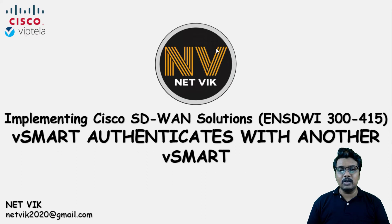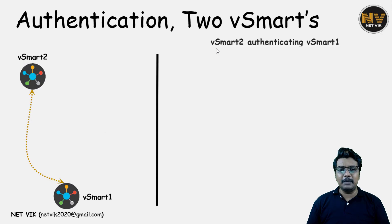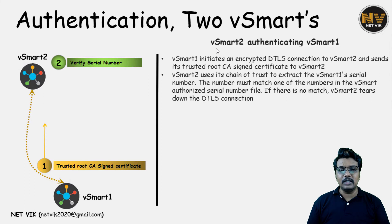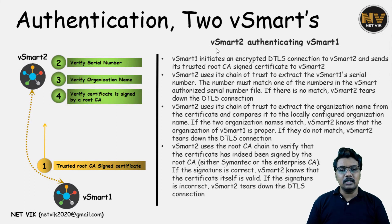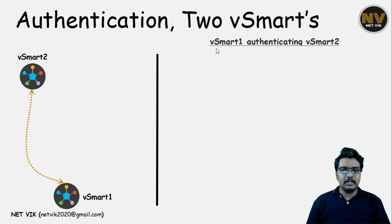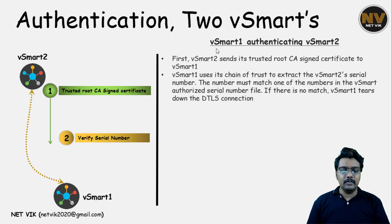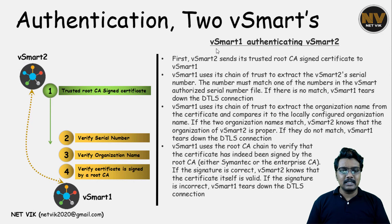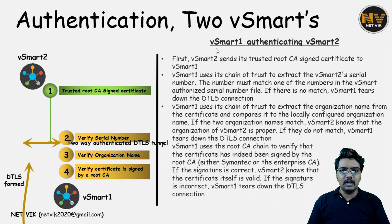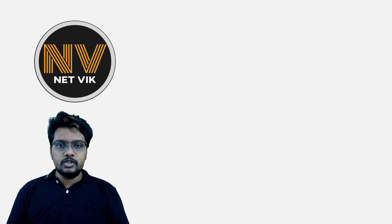Next, let's see how authentication happens between two vSmarts — for example in a design where you have two vSmarts for redundancy. They will authenticate between themselves to form a control plane tunnel. vSmart 1 sends a signed certificate; vSmart 2 checks the serial number, org name, and the signed certificate. Then vSmart 2 sends its signed certificate; vSmart 1 checks the serial number, org name, and certificate validity. When bi-directional authentication is successful, a dateless tunnel is formed between them.